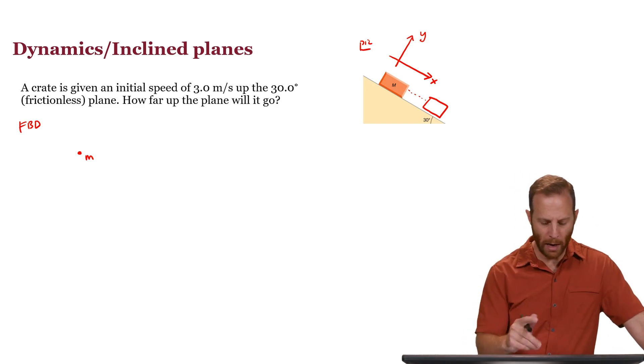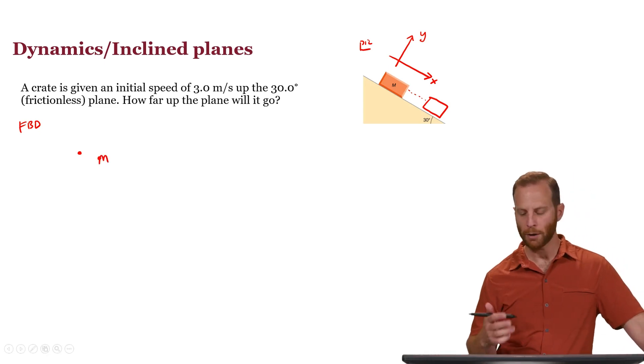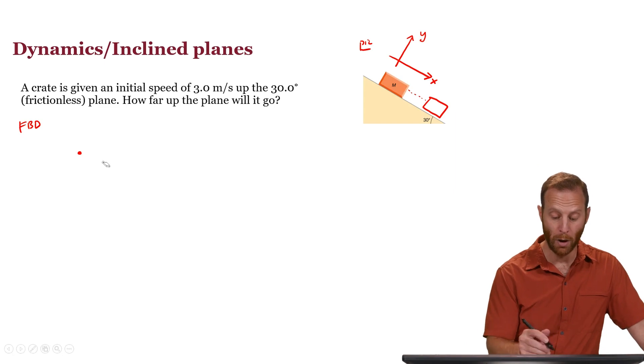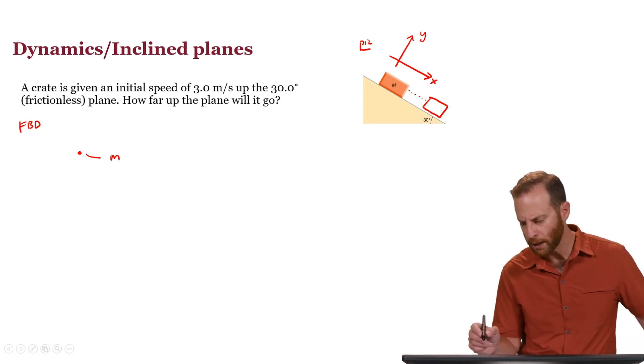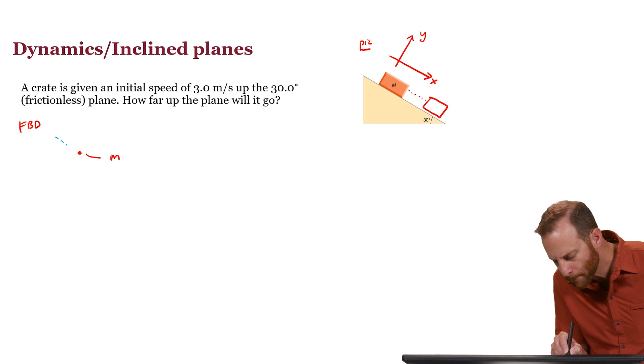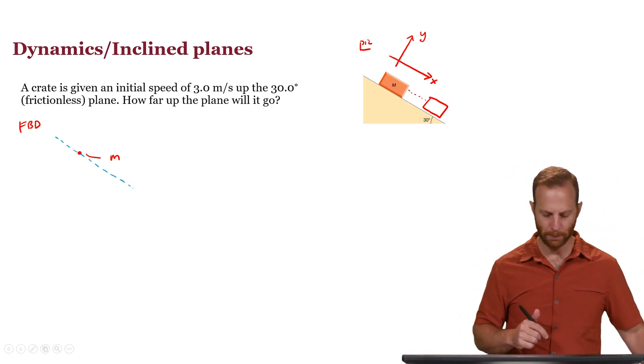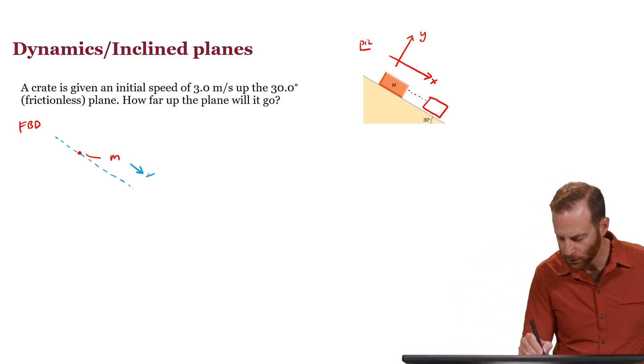And before I go any further, I probably want to put in some dashed lines to help me figure out the direction of the forces and their components in case I need them. Let me go ahead and do that with this blue line, trying to make it parallel to the picture that I see. That will be the ramp direction. In other words, this is the x direction. This will be the y direction.